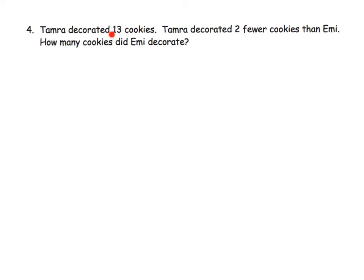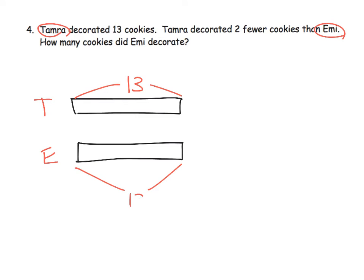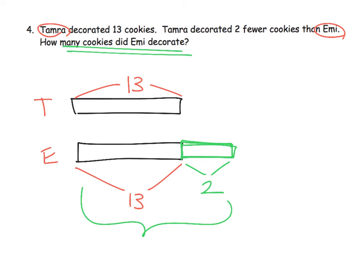So Tamara decorated 13 cookies. Tamara decorated two fewer cookies than Emmy. So we have two characters — Tamara and Emmy — and I'm going to give them both a tape diagram of the same length. We go back and read: Tamara decorated 13 cookies, so this tape represents 13, and that means Emmy's also represents 13. But Tamara decorated two fewer cookies than Emmy, so whose tape is supposed to be longer — Tamara's or Emmy's? Emmy's is supposed to be longer, so we're going to add on a little bit. We know that length is supposed to be two. So Emmy decorated 13 plus two, which is 15 cookies.